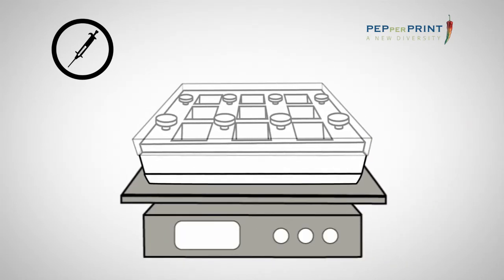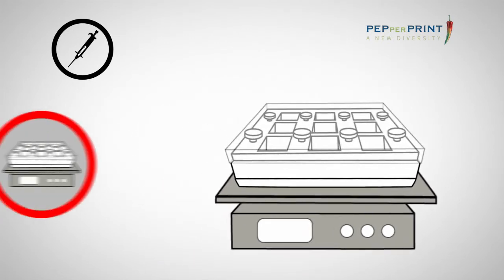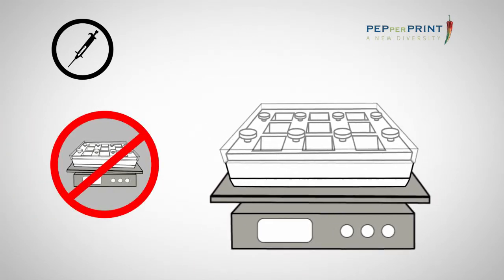Use an orbital shaker to get optimal wetting. Rocking shakers may cause de-wetting of the slide surface and are not recommended.